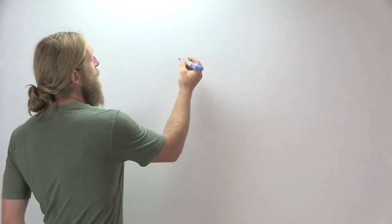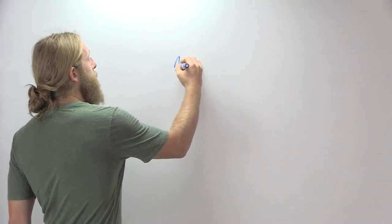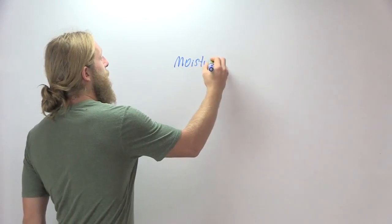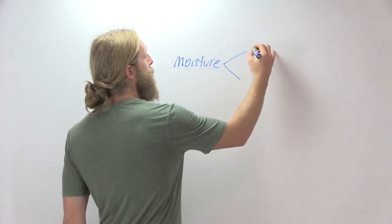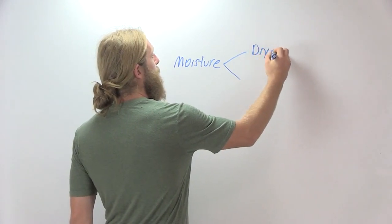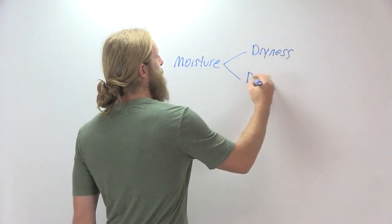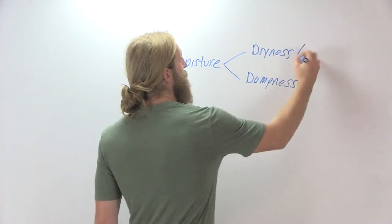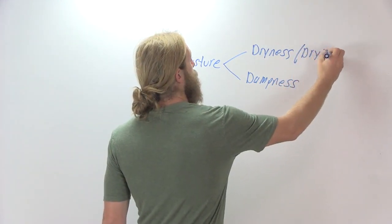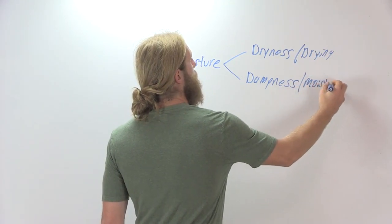And this is a polarity that we see in energetic models based on moisture. And specifically, obviously in our moisture polarity we have dryness and we have dampness in people, or we have drying remedies or moistening remedies.